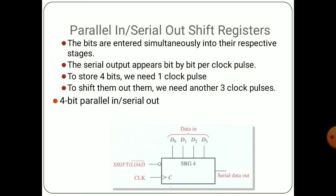For storing the data, that is for loading the data, only one clock is more than enough. For example, if you want to store four bits of data, only one clock — for a single clock we can store the entire data. For sending out, that is shifting, three clock pulses are required. I am going to explain that with this diagram.